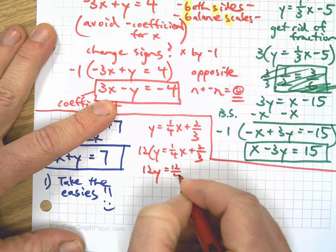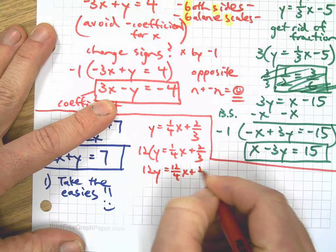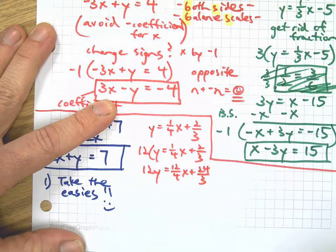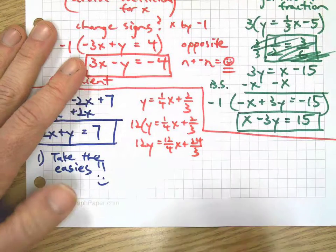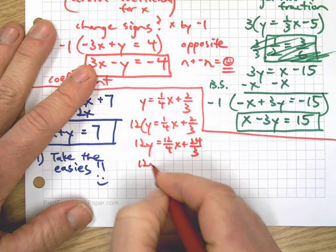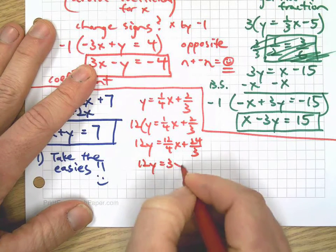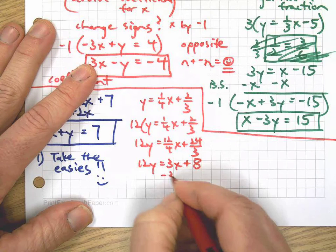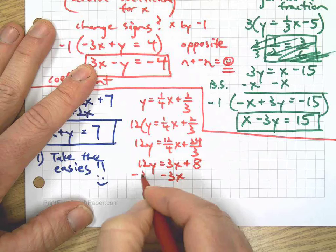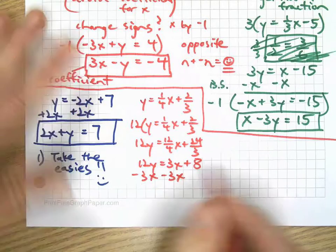So 12y equals 12 over 4x plus 24 over 3. Hey, I thought you were going to get rid of all those fractions. Hold on, I'm just showing my work. Chill. 3x plus 8.